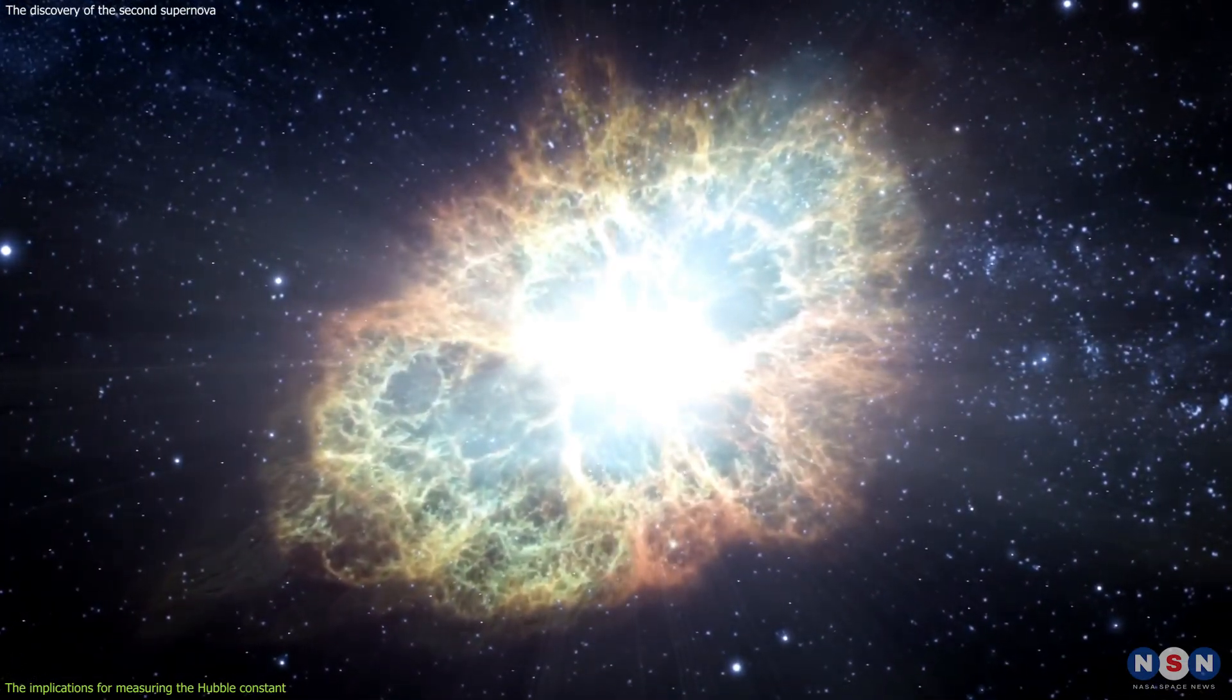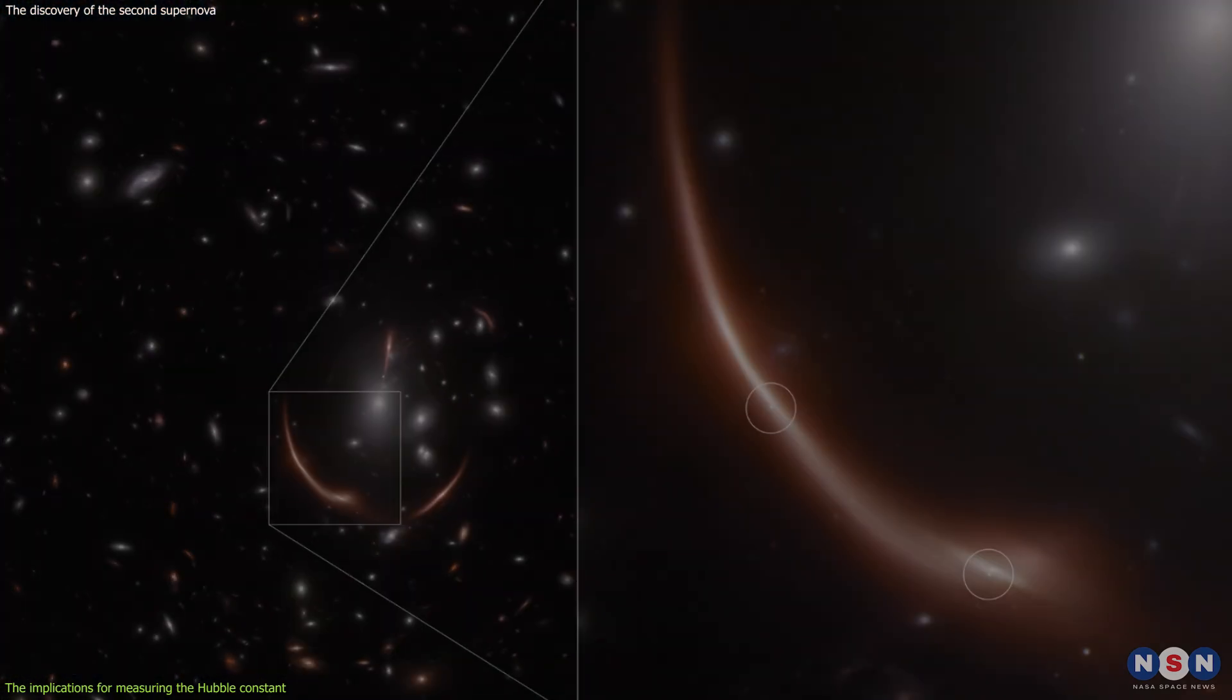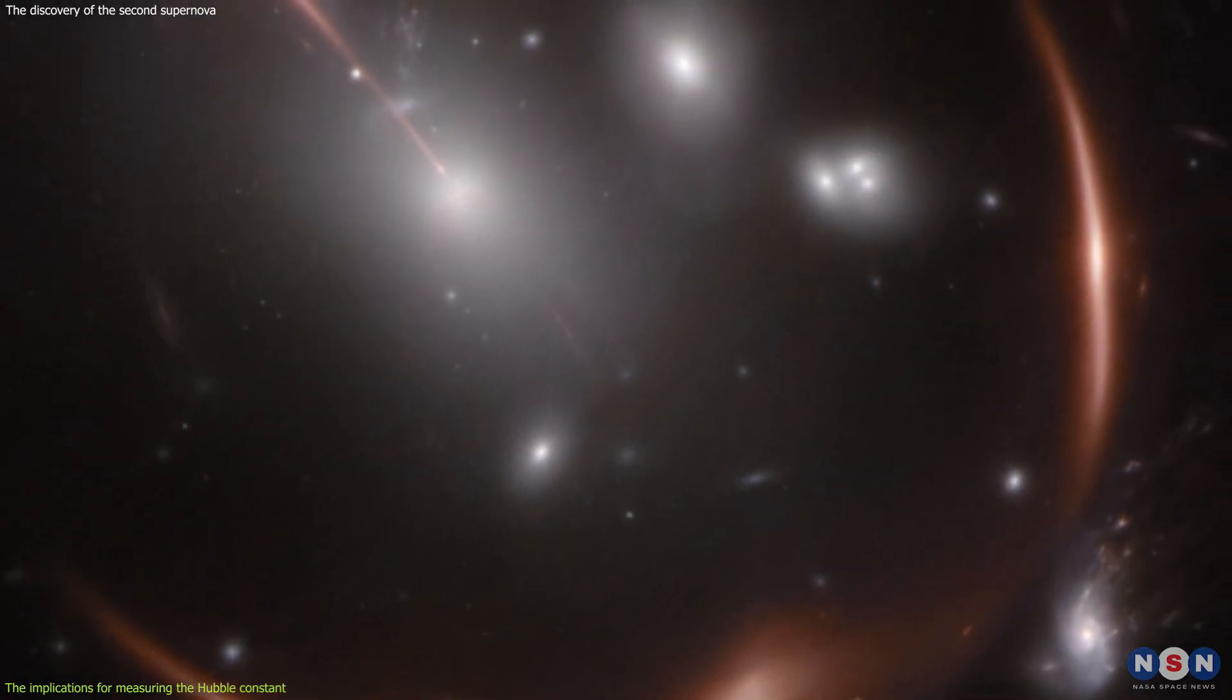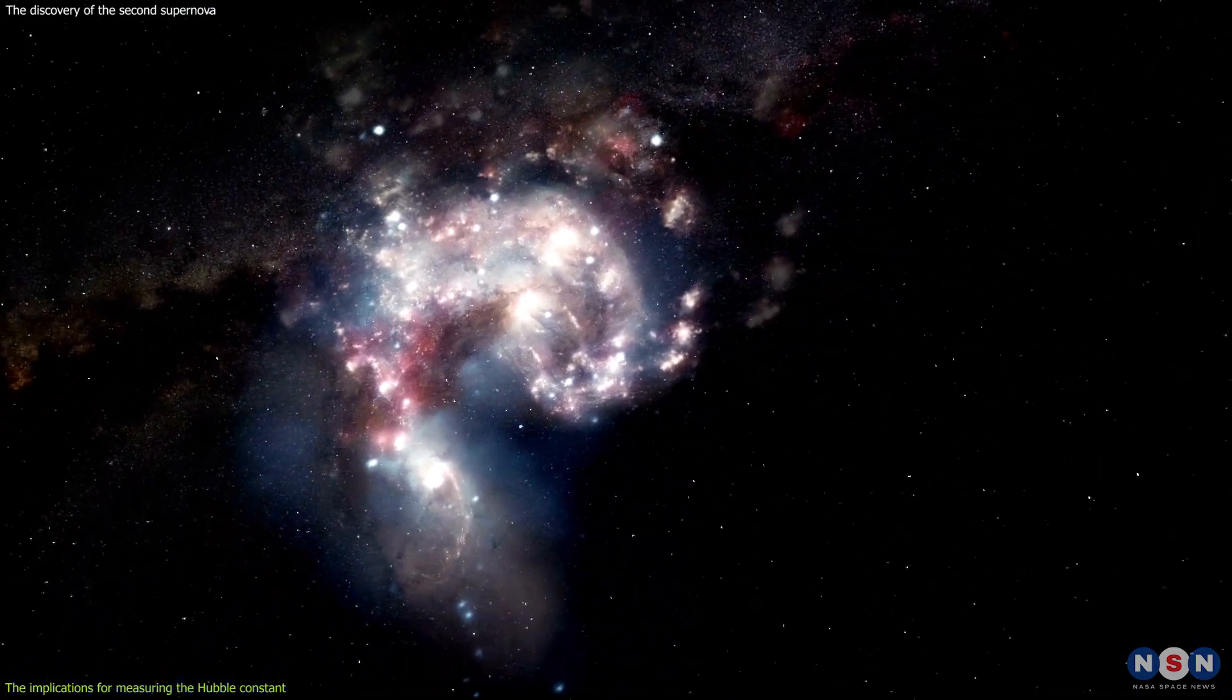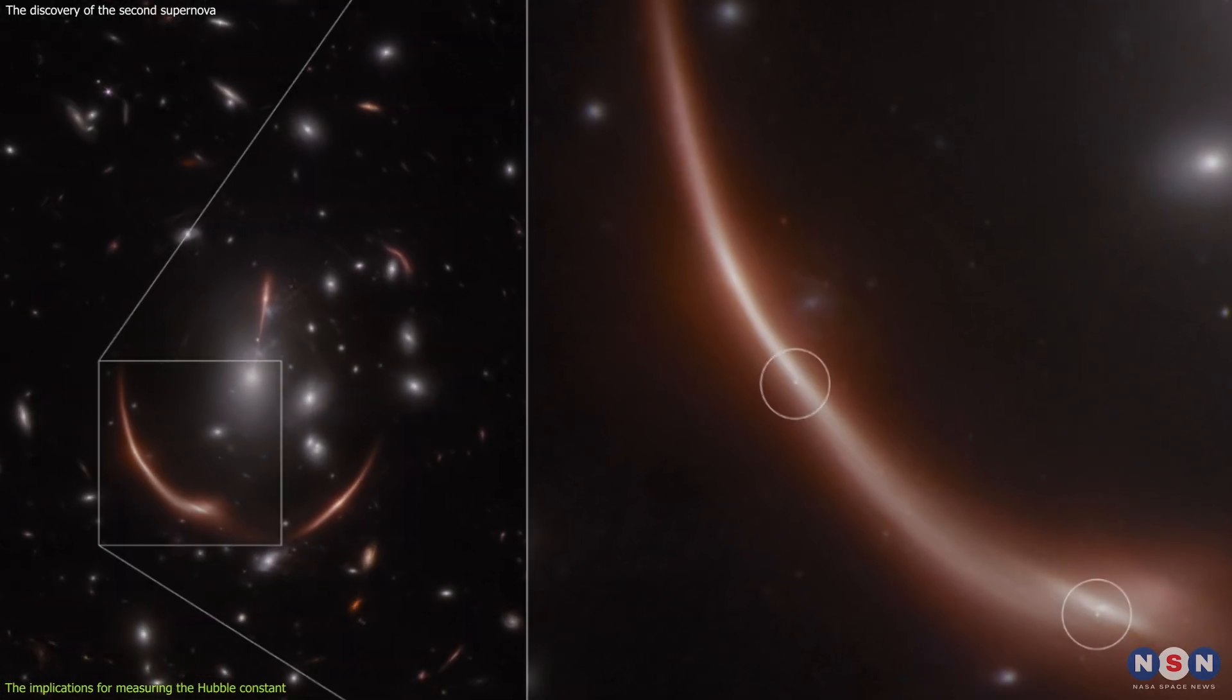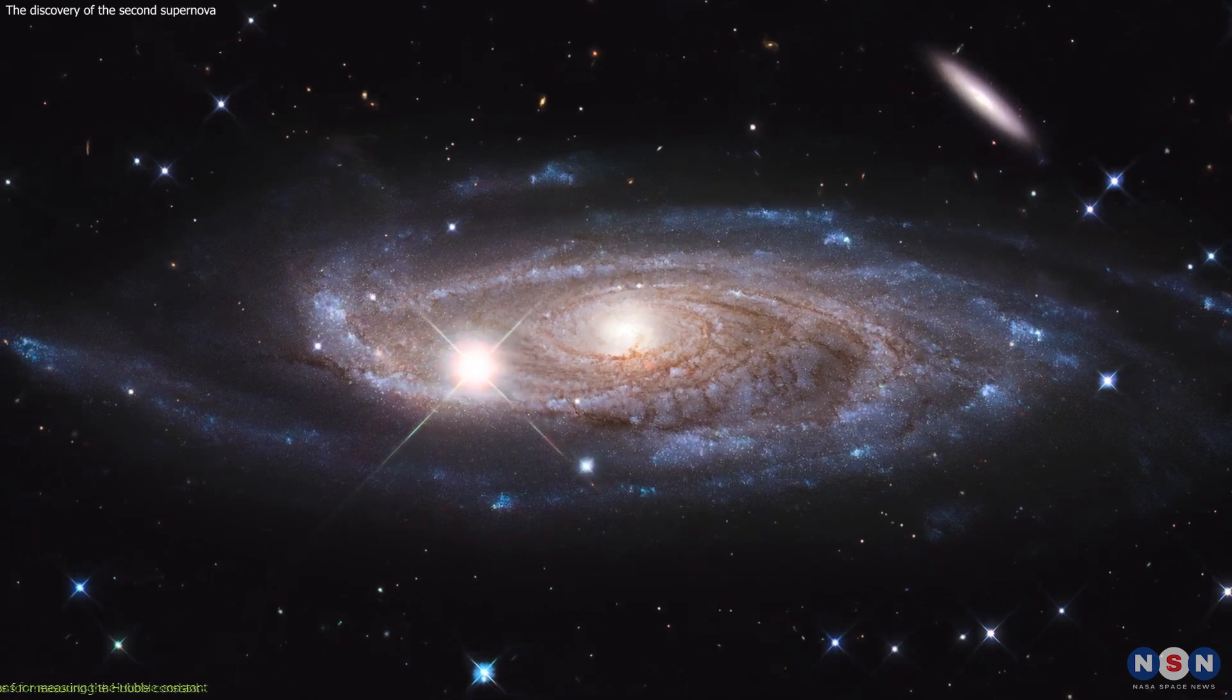However, this method is not perfect, and it has its own challenges and limitations. For example, the time delay measurement is not very precise, because it depends on the accuracy of the supernova detection and the background galaxy variability. The lensing model is also not very accurate, because it depends on the mass distribution and the shape of the cluster, which are not well known. Moreover, the number of supernovae in lensed galaxies is very small, and they are very rare and hard to find. To improve this method, we need more data and observations from Webb and other telescopes, and more sophisticated models and simulations of the lensing effect.